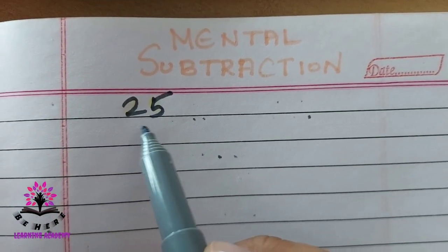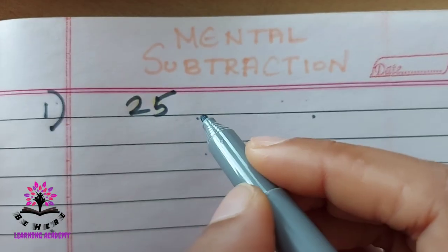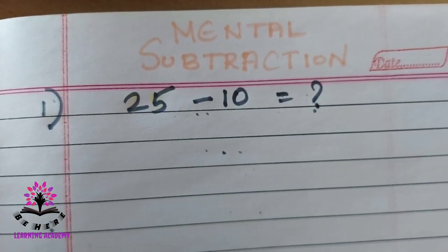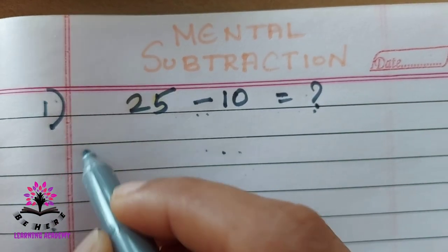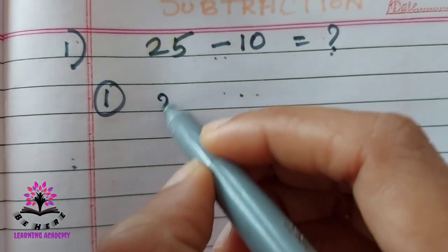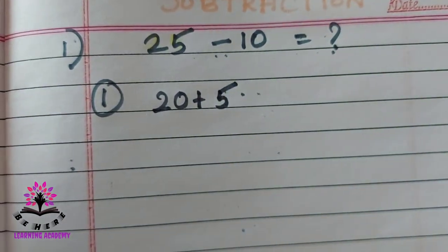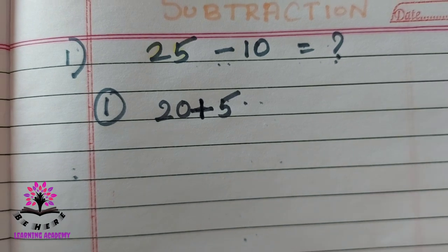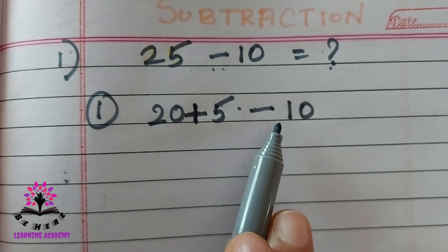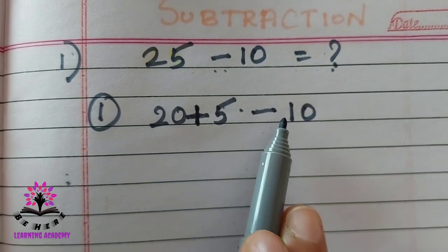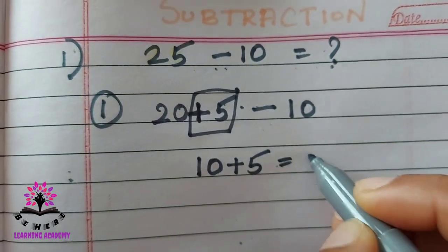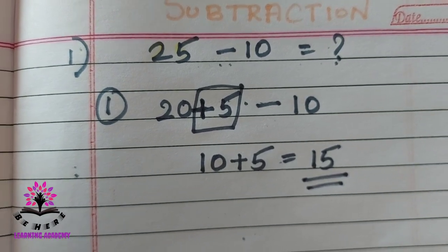Rani brought 25 chocolates on her birthday and she distributed 10, so 25 minus 10. You have to subtract it mentally. The first method: write 25 as 20 plus 5. Then minus 10 as it is. Now, subtract 10 from 20: 20 minus 10 is 10. This plus 5 will be remaining. Add them: the answer is 15.